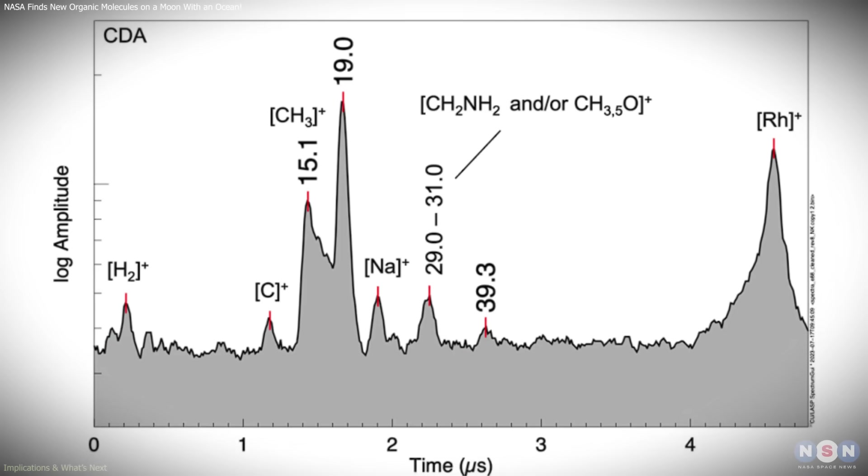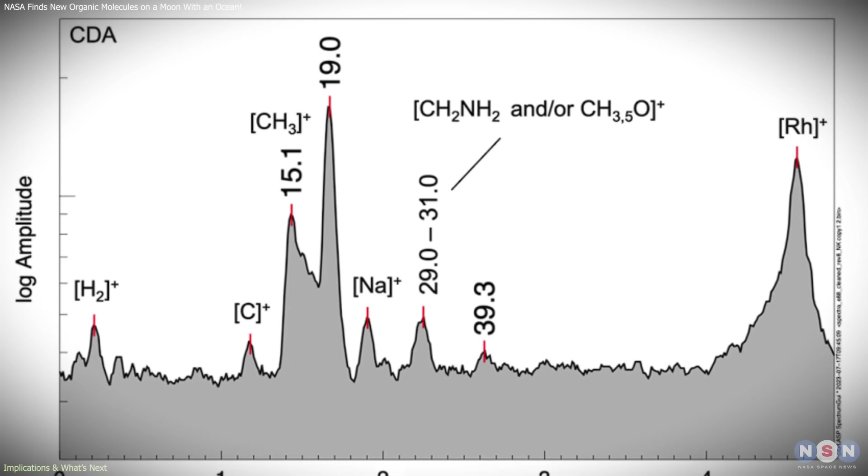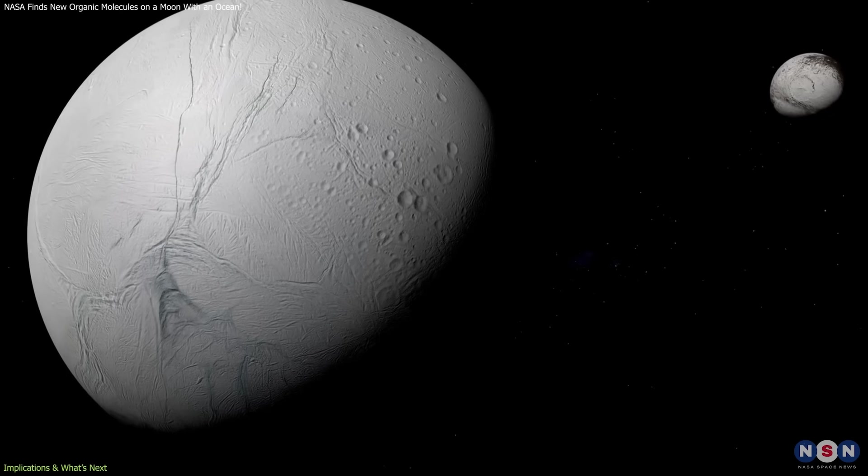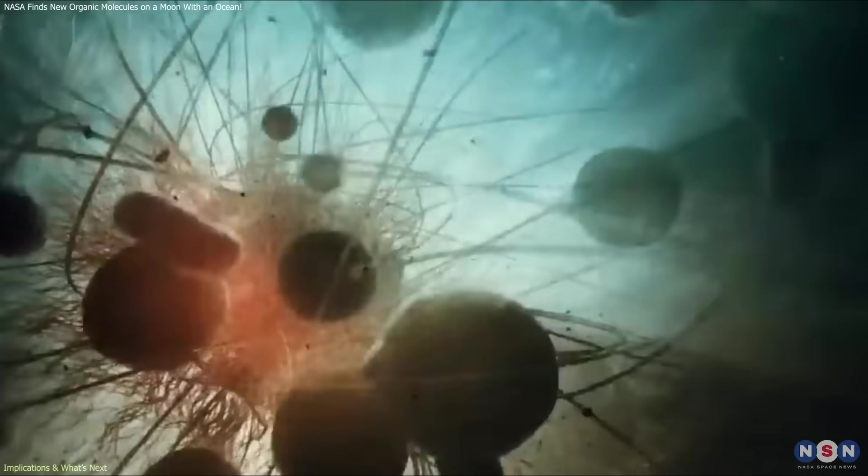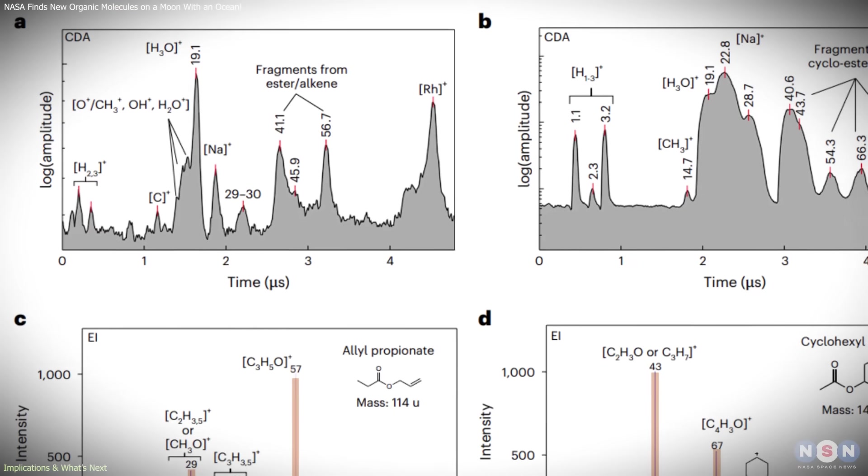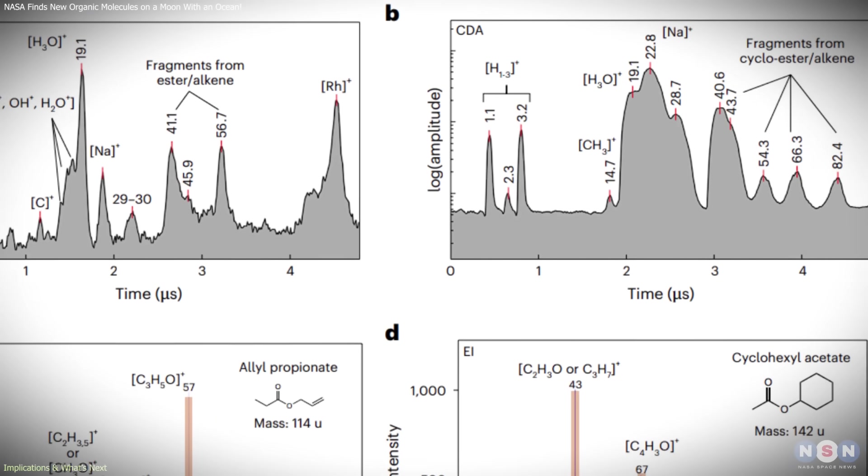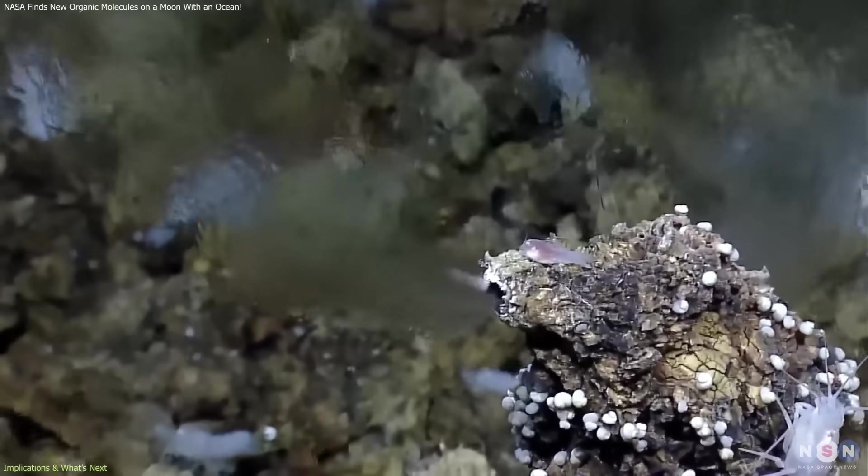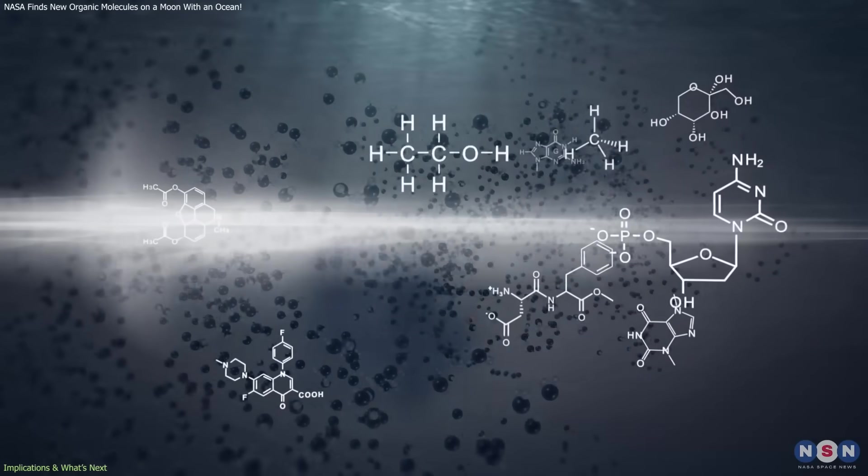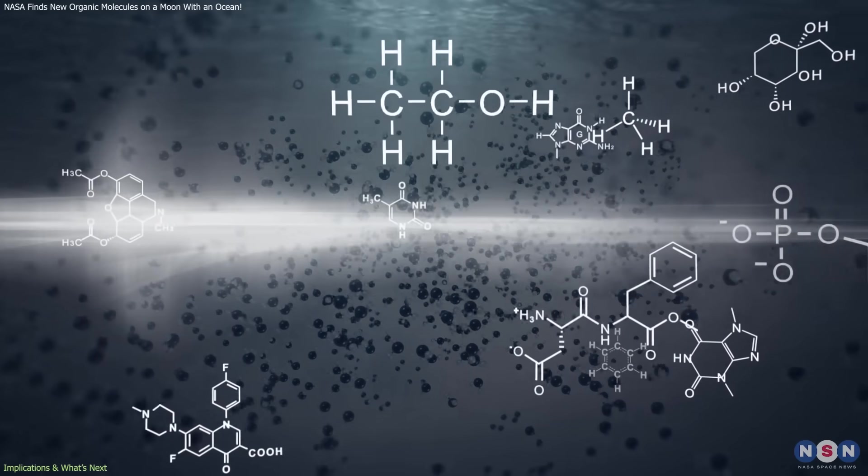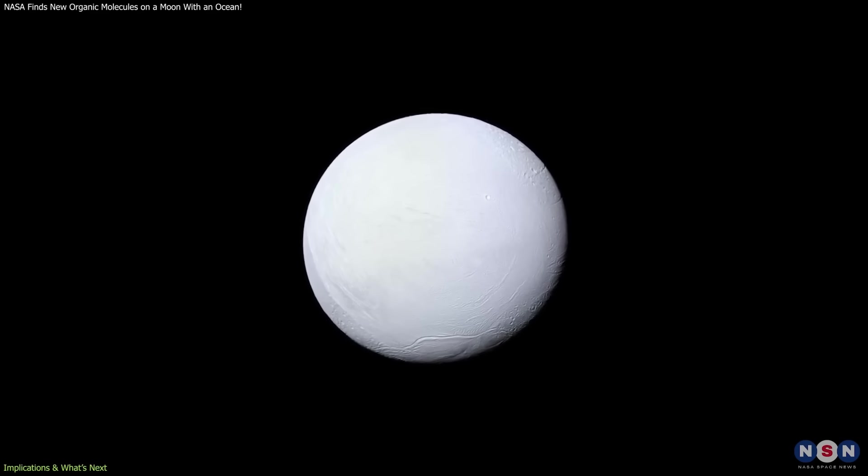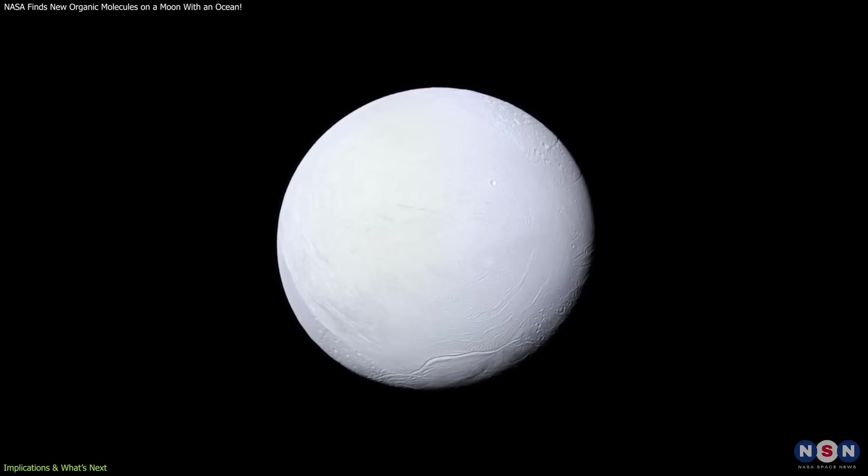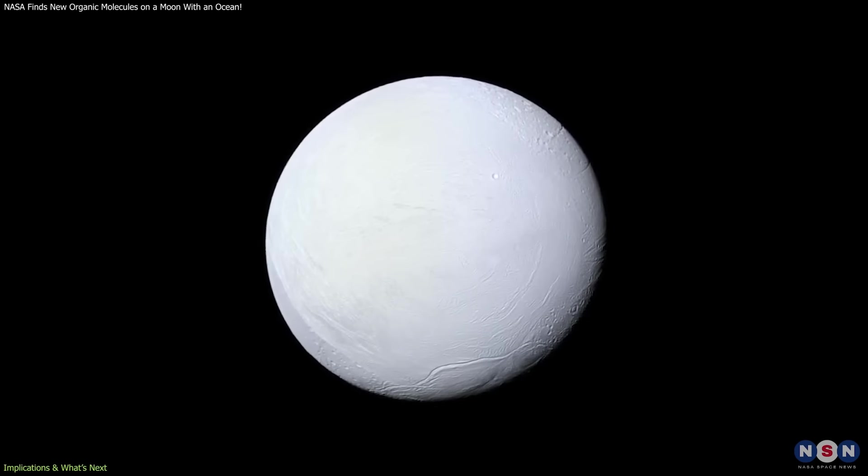The expanded organic profile strengthens the scientific case for further investigation of Enceladus and its ocean. While the discovery does not point directly to biological activity, it increases confidence that the moon possesses multiple ingredients associated with life—liquid water, internal heating, mineral interactions, and a notable variety of organic compounds. Together, these factors make Enceladus one of the most accessible and informative targets for astrobiology.